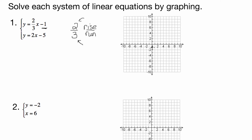So we're going to rise 2 and then run 3. You can go all the way across your paper to do this — it's always safe in case you don't see the intersection right away. So I'm going to draw a line from this point all the way to this point.